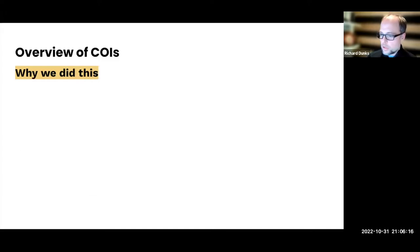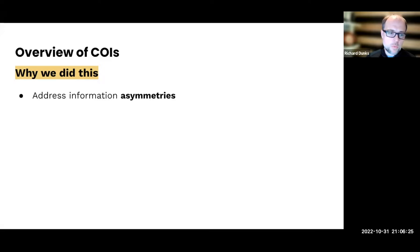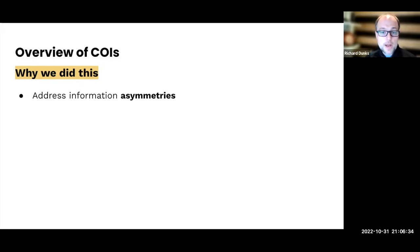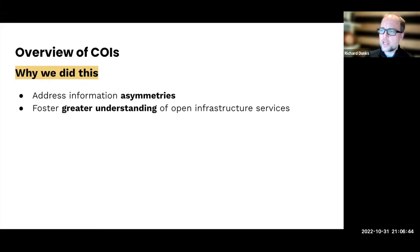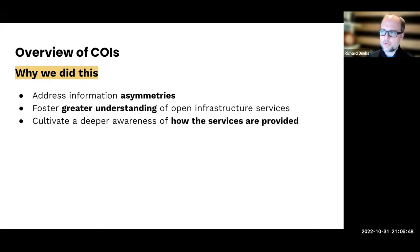Just a review of COIS — the Catalog of Open Infrastructure Services. Some of this was covered by my colleague Tanya Hernandez-Artiz in her session earlier today. We envisioned the catalog as a way to address information asymmetries in the space. We were met with people saying they don't really know what services are out there and it's hard to compare one service with another in any meaningful way. We wanted to foster greater understanding of available services and cultivate a deeper understanding of how they're provided.